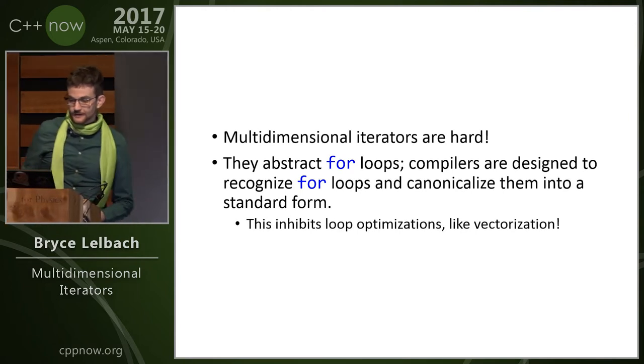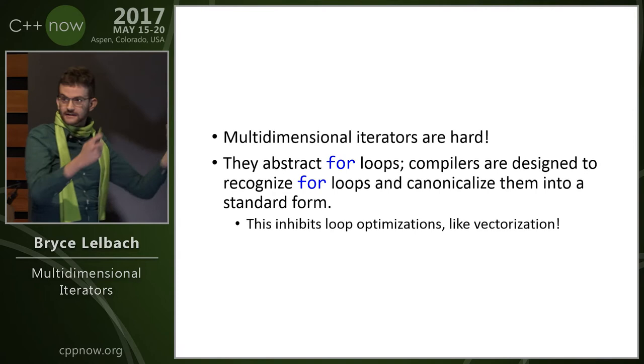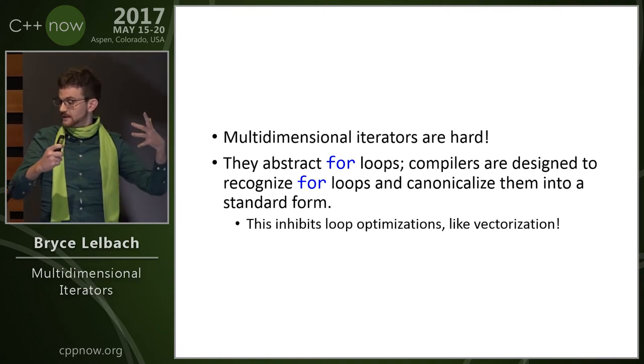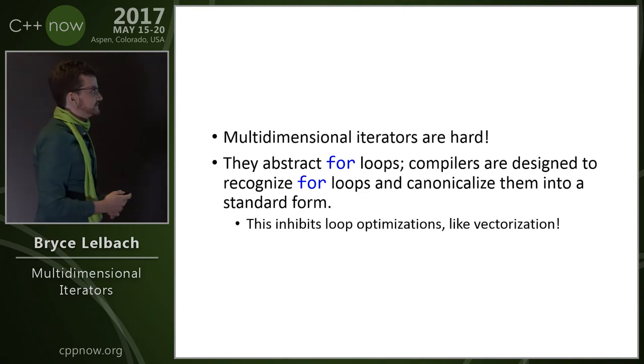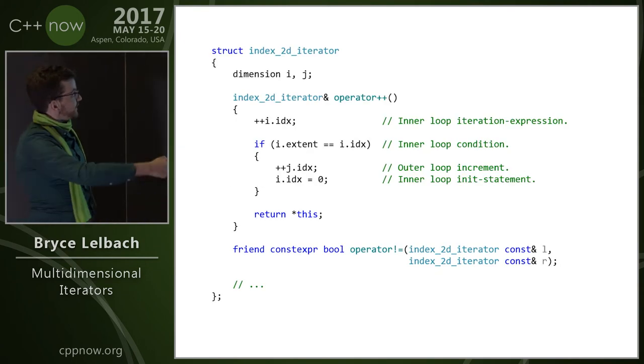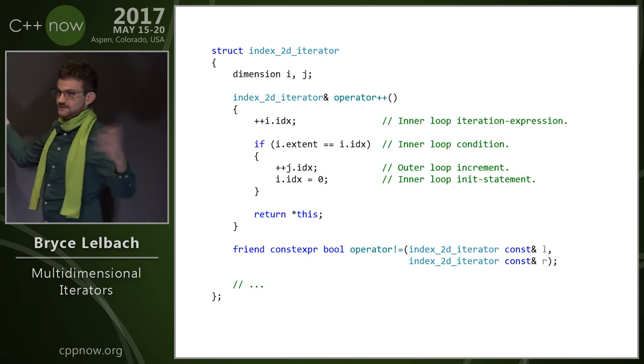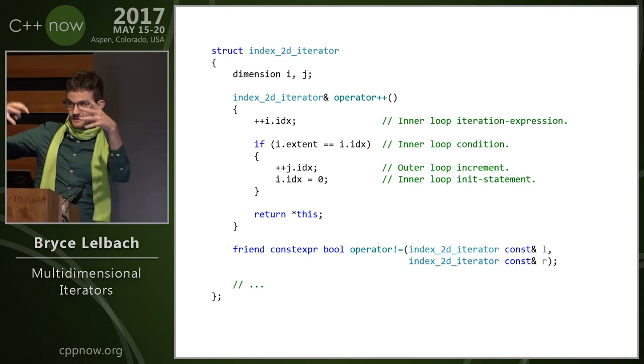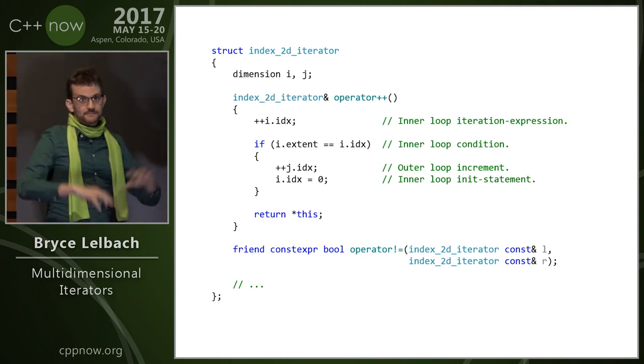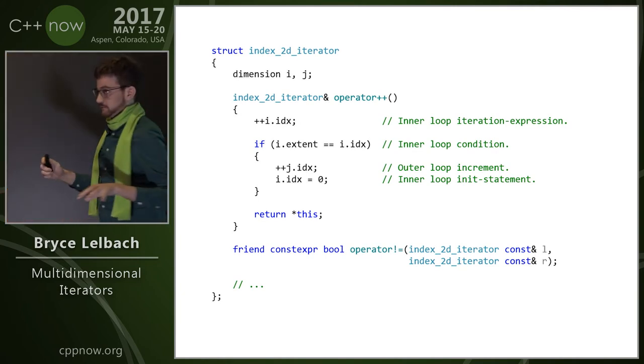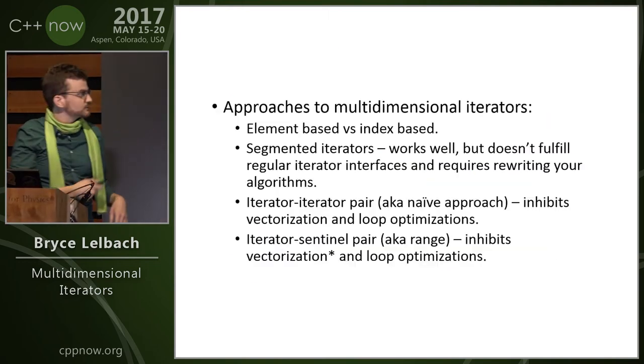But multidimensional iterators are hard. They abstract for loops, and compilers are designed to recognize for loops and then put them into a canonical form that they understand. This is sort of hard when your for loop is abstracted into an iterator like this. All the compiler sees is, hey, there's some back edge in your loop, like in the innermost loop here. I don't know what to do with this. I'm just going to give up on trying to vectorize your loop.